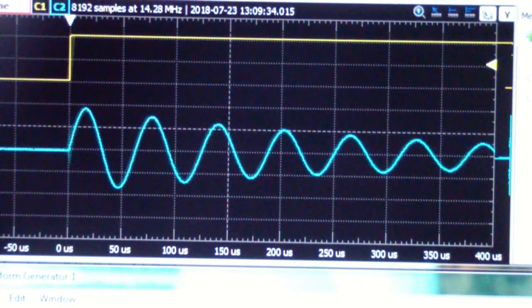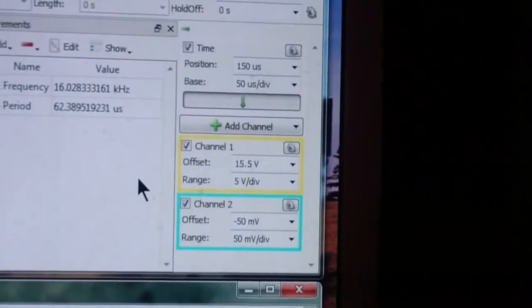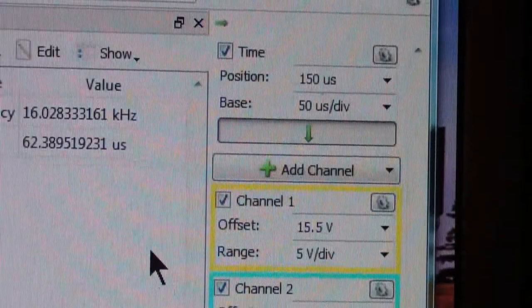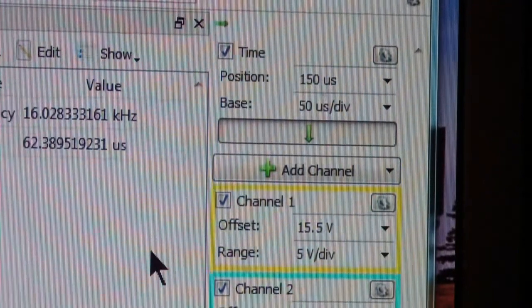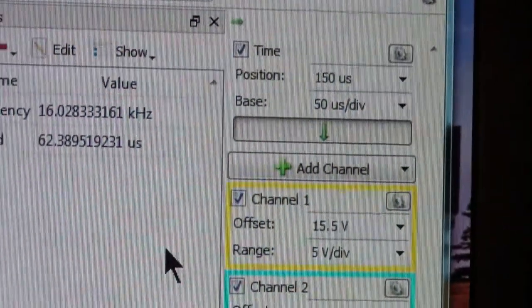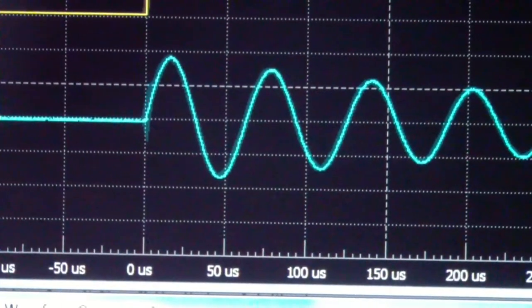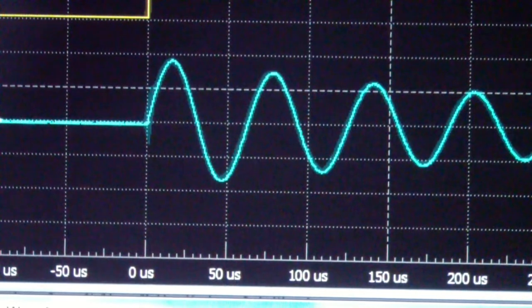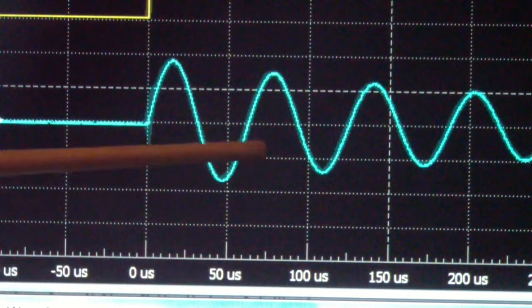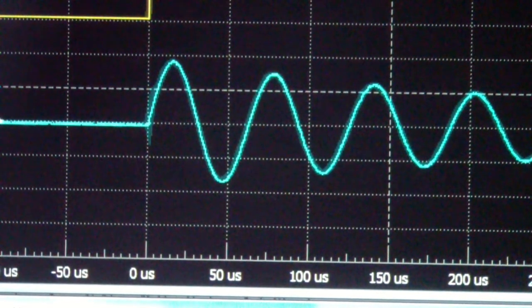The scope is set to 50 microseconds per division. You can see at the bottom - this is 50 microseconds, this is 75 - so where it completes one cycle is a little over 60 microseconds.